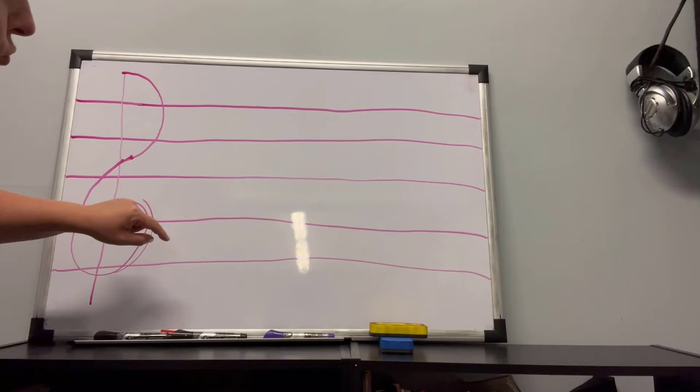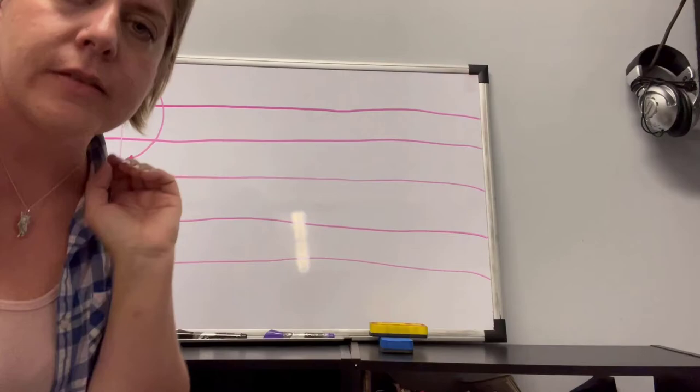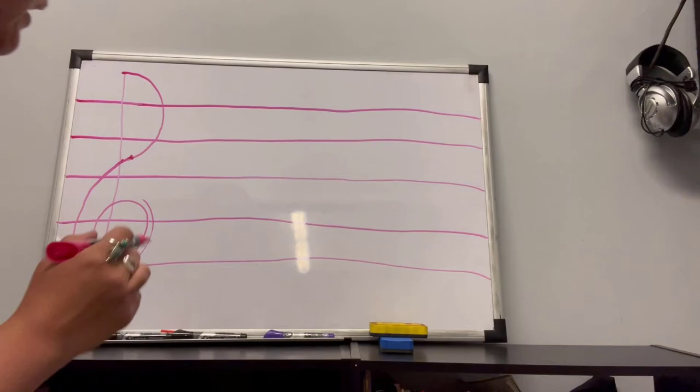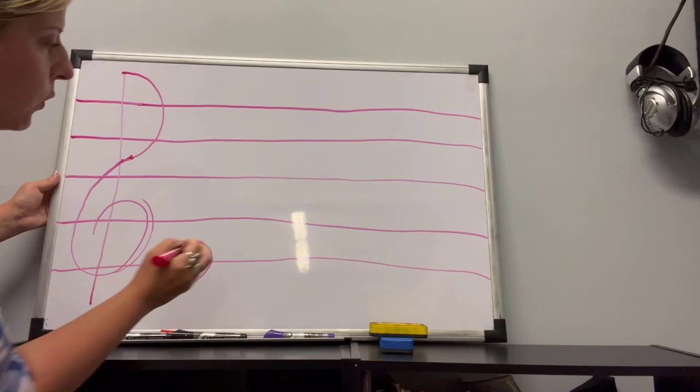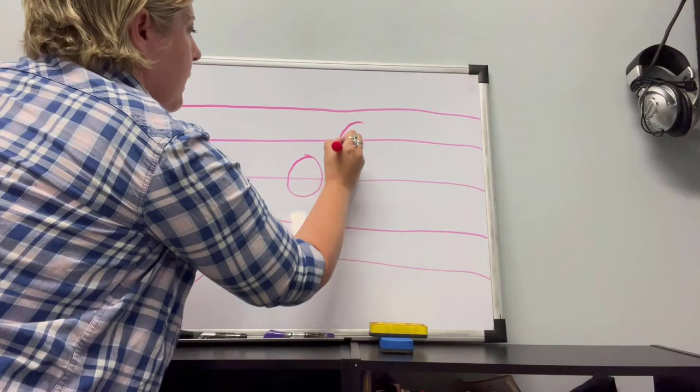Now what we're gonna do is draw a whole note. A whole note is just a circle and that equals four counts, but that doesn't matter right now. We're just gonna draw a whole note on each line kind of in a diagonal. Starting down here, see how the line cuts through the middle of the notes? That's what you want. Then I'm just gonna go on each line and draw a whole note.